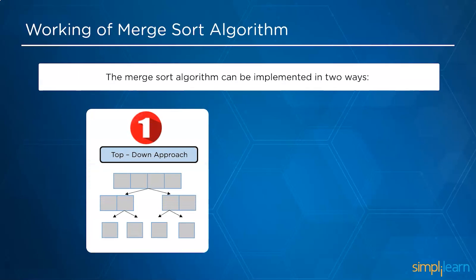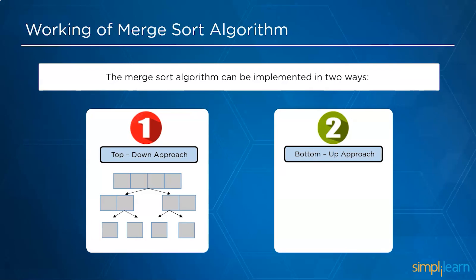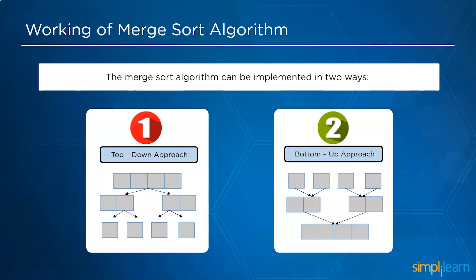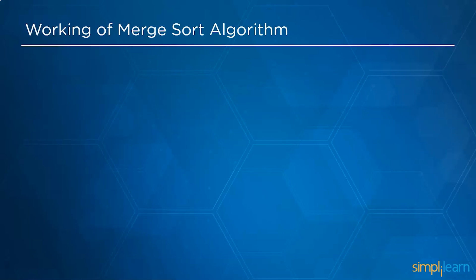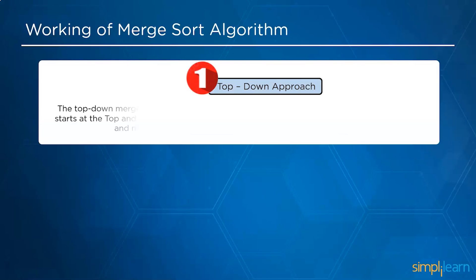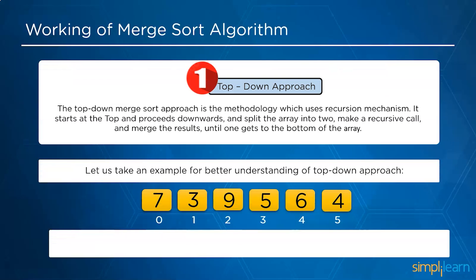There are two approaches to implement the merge sort algorithm. The first method is the top-down approach and the second is the bottom-up approach. The top-down approach implies that it begins with the large picture and is then broken into smaller chunks. The bottom-up technique starts with a specific number of jobs and works its way up to the general solution. The top-down merge sort approach uses a recursion mechanism, starting at the top and proceeding downwards, splitting the array into two halves, making a recursive call and merging the results.